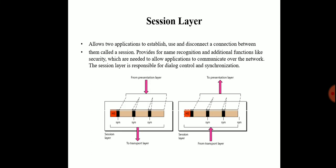Next is the session layer. It allows two applications to establish, use, and disconnect a connection between them, called a session. It provides for name recognition and additional functions like security, which are needed to allow applications to communicate over the network. The session layer is responsible for dialogue control and synchronization.